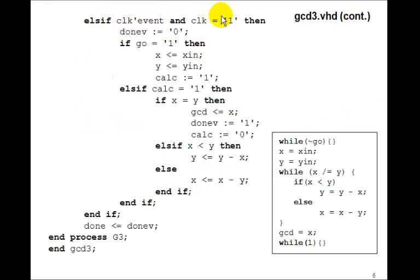Then, on the rising edge of the clock, set DUNV to 0. If GO equals 1, we do the initialization. X gets XIN, Y gets YIN, and we set CALC to 1. Then we leave on the next rising edge of the clock. GO is 0, so we go to here.